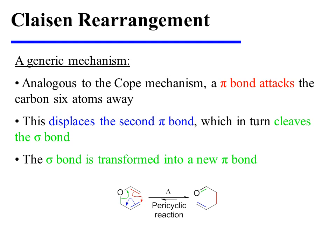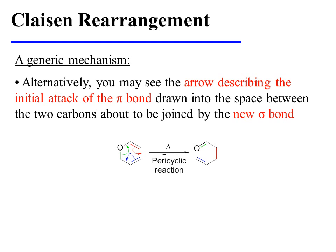As we turn our attention to the mechanism, we see that it is very directly comparable to that of the Cope mechanism. A pi bond attacks the carbon six atoms away, and this displaces the second pi bond, which in turn cleaves a sigma bond as it migrates, and that sigma bond is transformed into a new pi bond. Alternatively, you may sometimes see the arrow describing the initial attack of the red pi bond drawn into the space between the two carbon atoms that are about to be joined by the new sigma bond. This is simply a slight variation on the mechanistic convention.